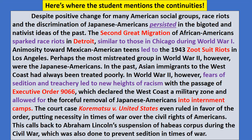Here's where the student starts mentioning continuities — note where it talks about discrimination and race riots persisting alongside the bigoted and nativist ideas of the past. The essay covers changes in paragraphs one and two, then addresses continuity in paragraph three. The Zoot Suit Riots, Executive Order 9066 (Japanese internment), and the Korematsu case are all used here. This student does a good job of addressing the continuities at the end.